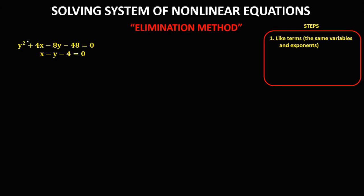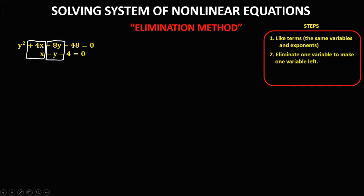In the system, since we have like terms — positive 4x and positive x, and also negative 8y and negative y — we can eliminate one variable so that we only have one variable left. However, if we try to eliminate y, observe that we still have two variables remaining.